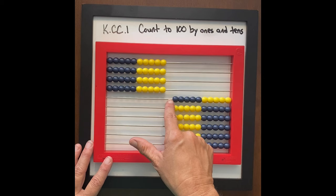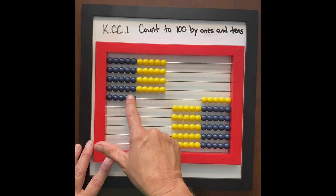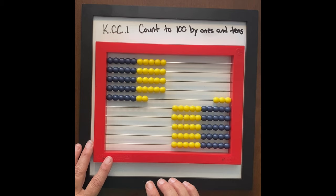Let's count by ones from 4 tens: 4, 10, 1 — 4, 10, 2 — 4, 10, 3 — 4, 10, 4 — 4, 10, 5 — 4, 10, 6 — 4, 10, 7. What is 4, 10, 7?